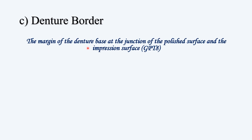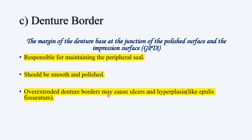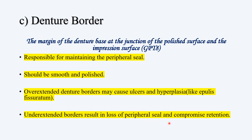Next we have the denture border — the margin of the denture base at the junction of the polished surface and the impression surface. It is responsible for maintaining the peripheral seal, since that border is touching the tissue. It should be smooth and polished; otherwise, since it is touching the tissue, we may get hurt. Overextended denture borders can cause ulcers and hyperplasia like epulis fissuratum — that is overgrowth of tissue due to chronic irritation. Underextended borders will result in loss of peripheral seal and compromised retention.